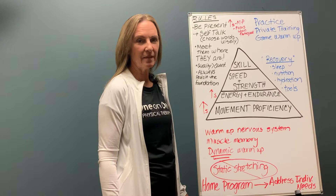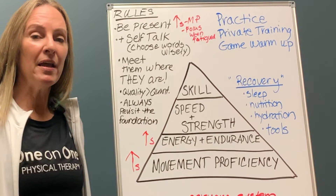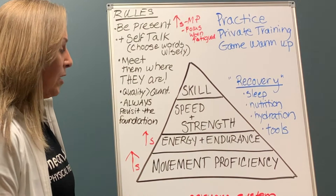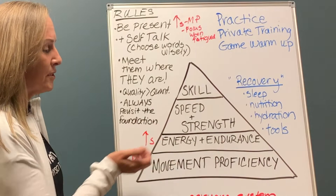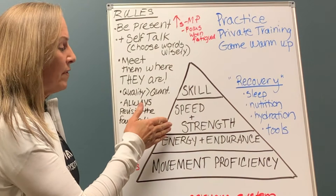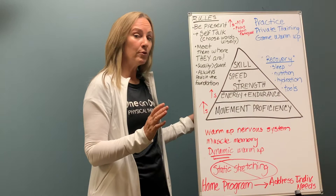To understand injury rates, we need to look at the movement pyramid. The base is movement proficiency — coordinated, clean movements and basic body control. Once established, we develop energy systems and endurance within movement patterns. With those two levels built, we can then develop speed and strength. Only with a good foundation can we finally work on skill.